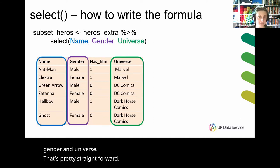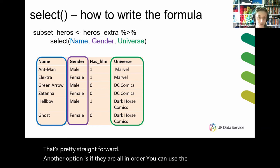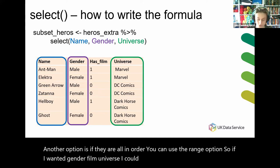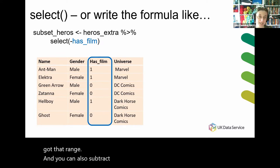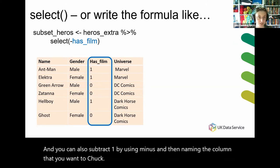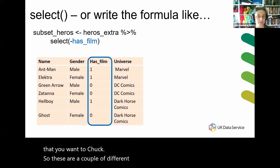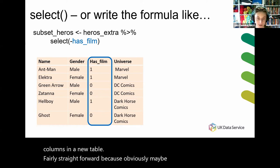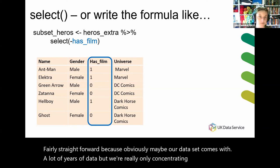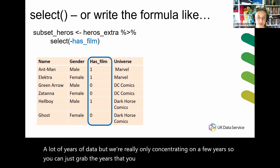Another option is if the columns are all in order, you can use the range option. So if I wanted gender, film, and universe, I could put gender colon universe to get that range. You can also subtract a column by using minus and then naming the column you want to remove. These are a couple of different ways to get subsets of columns in a new tibble — useful if, say, your dataset has a lot of years of data but you're only concentrating on a few.